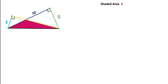Hello everyone. In this question, two right angle triangles are arranged in this way. The length of this sky blue line segment is given as 2 units, the length of this blue line segment is given as 10 units, and the length of this green line segment is given as 5 units. We have to find the shaded region area, that is this pink region area.